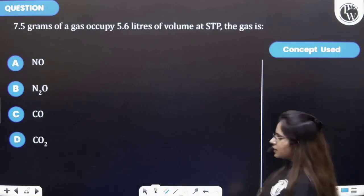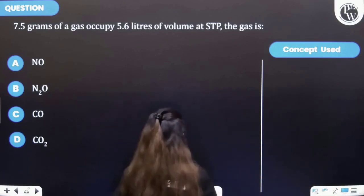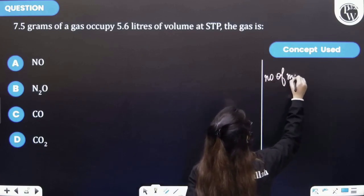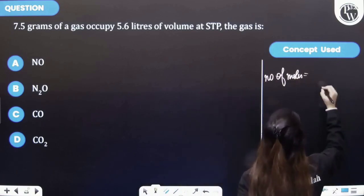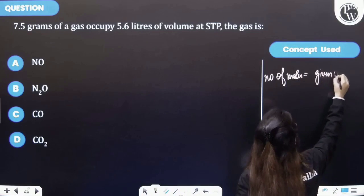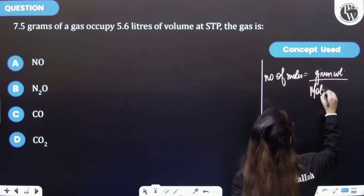So firstly, let's talk about the key concept that has to be used over here. Number of moles is equal to given weight upon molecular weight.